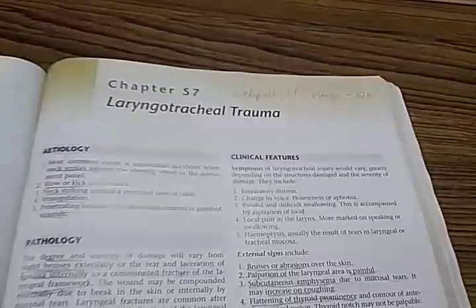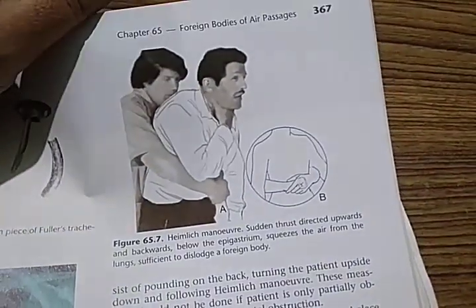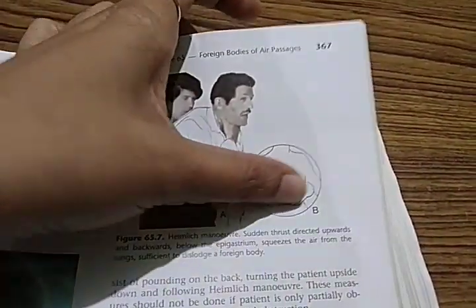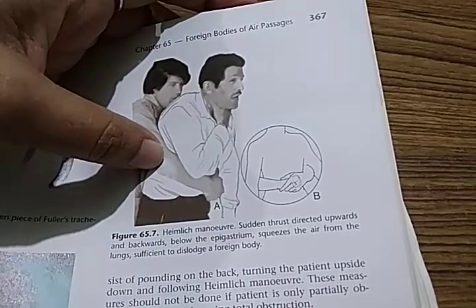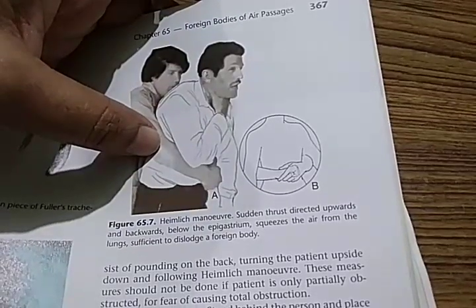Now they have come to laryngotracheal trauma — that means we are in the larynx and trachea section. Vocal cord positions are shown. Tracheostomy and airway management procedures are covered. This is the Heimlich manoeuvre — you should know this to save somebody's life if they are choking. A sudden thrust directed upward and backward below the epigastrium squeezes the air from the lungs, sufficient to dislodge a foreign body.